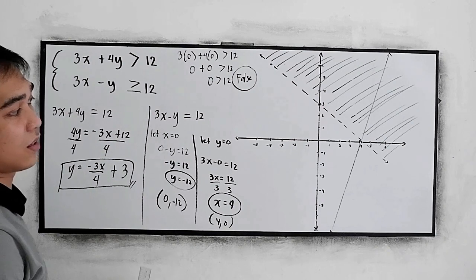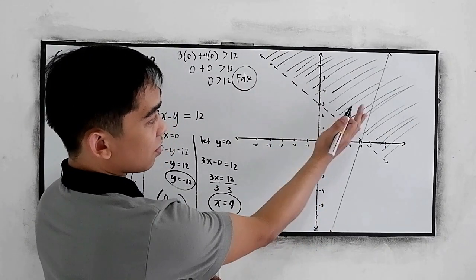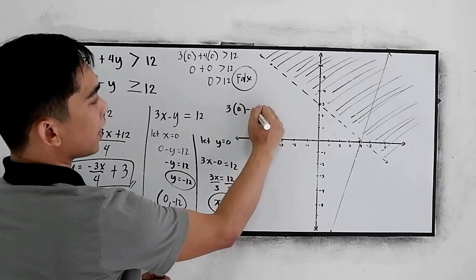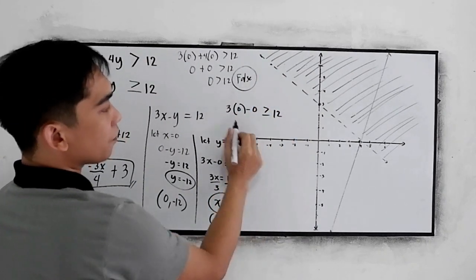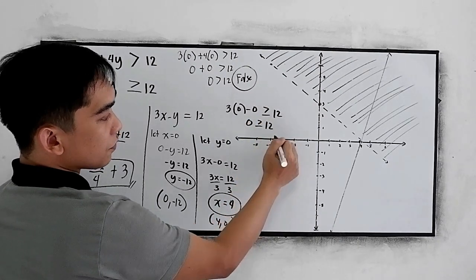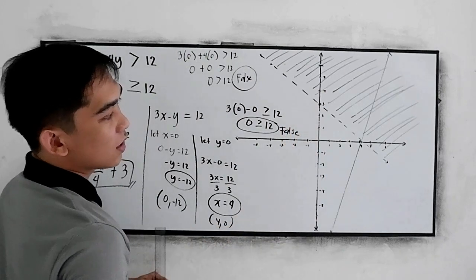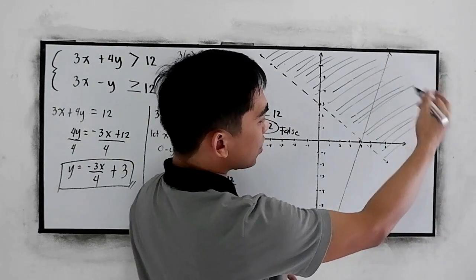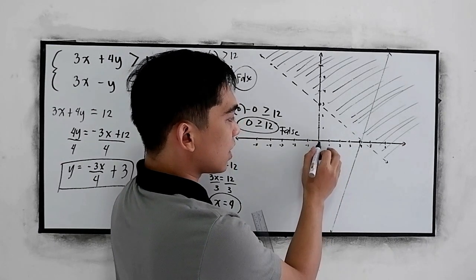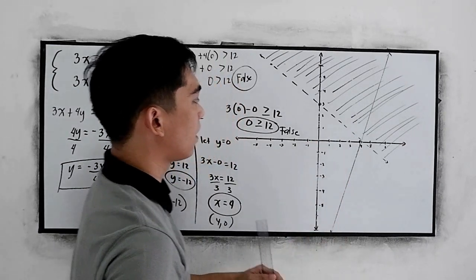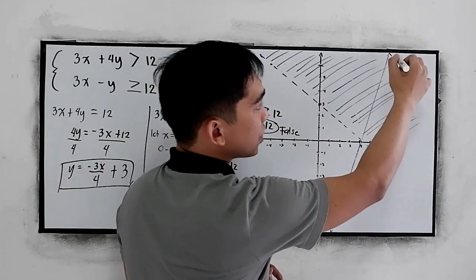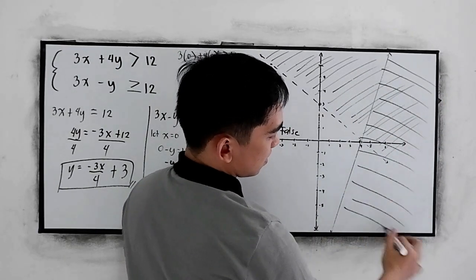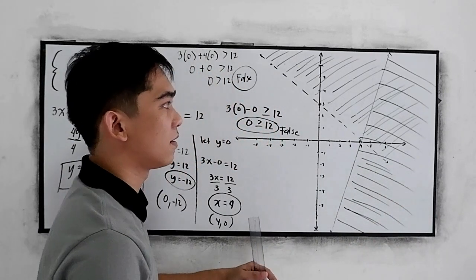Now we test the origin to determine which region to shade. We have 3 times 0 minus 0 — is it greater than or equal to 12? So 0 greater than or equal to 12 is false. Therefore, the rightmost part is the area we shade. This will be our graph.